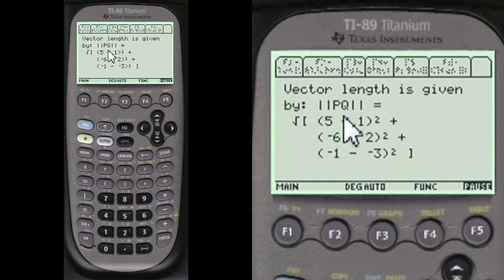The actual length is given by the magnitude or length of PQ, which is the system square root of the x, y, and z figures.